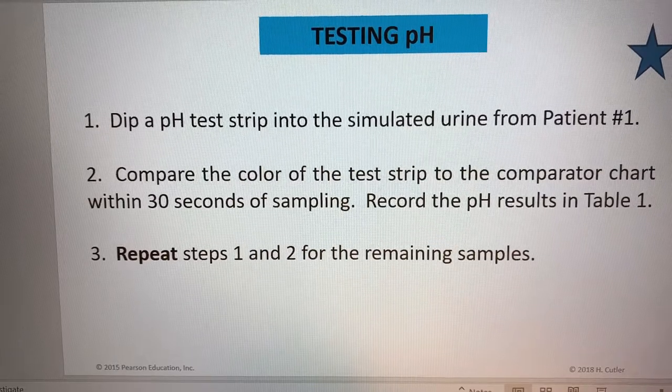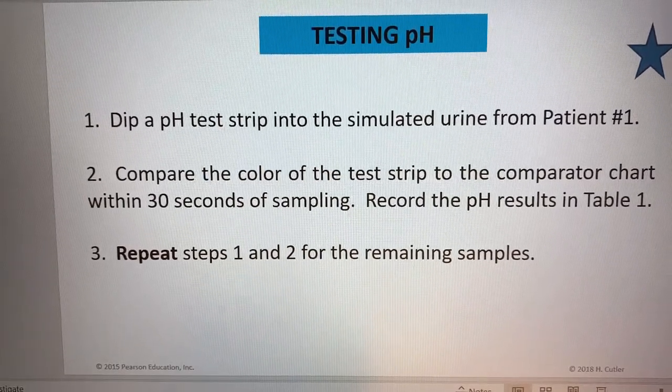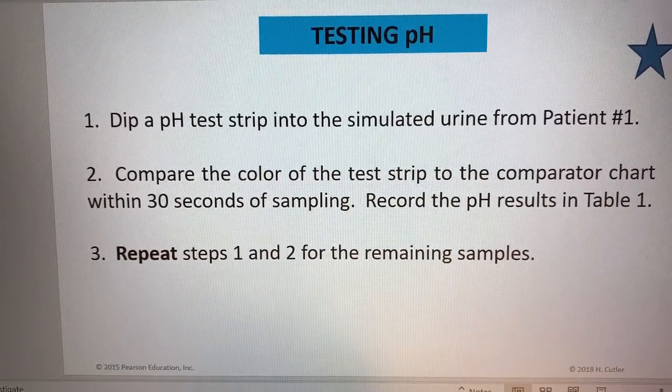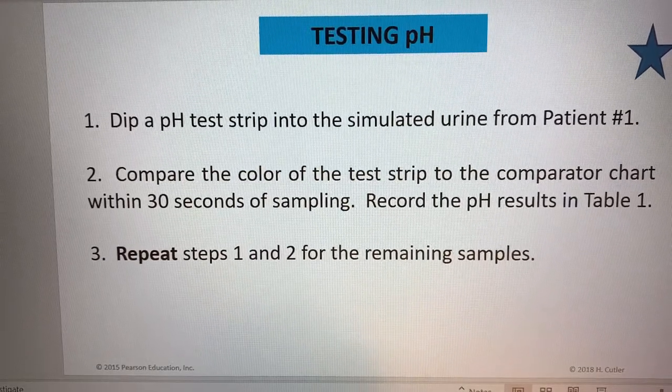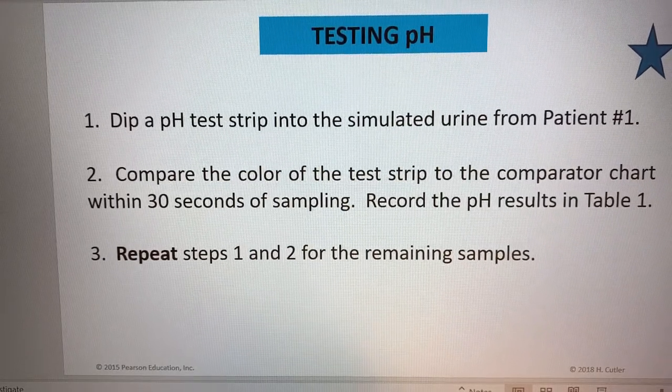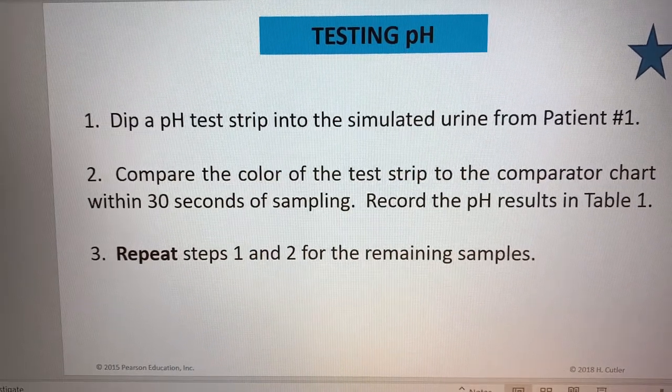For this one we want to test the pH of the urine samples that we have, and we'll just dip a pH strip into each of the urine samples and then compare the color of the strip to the comparison chart that's on the box.